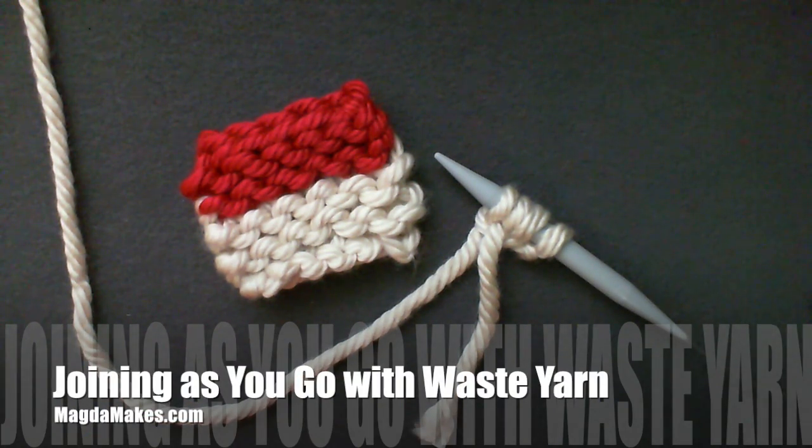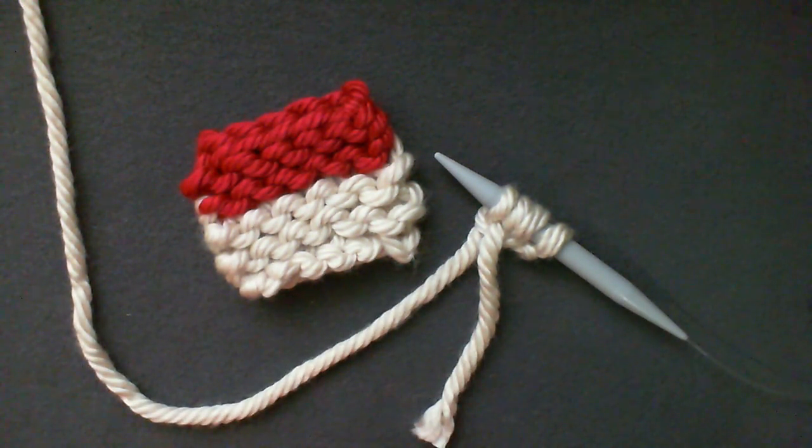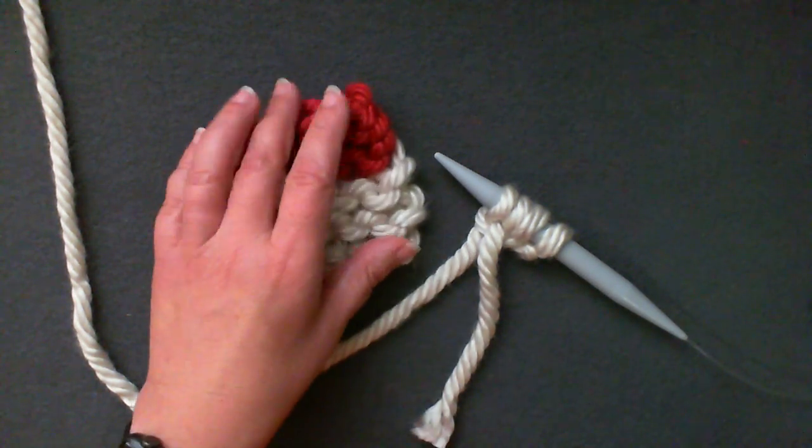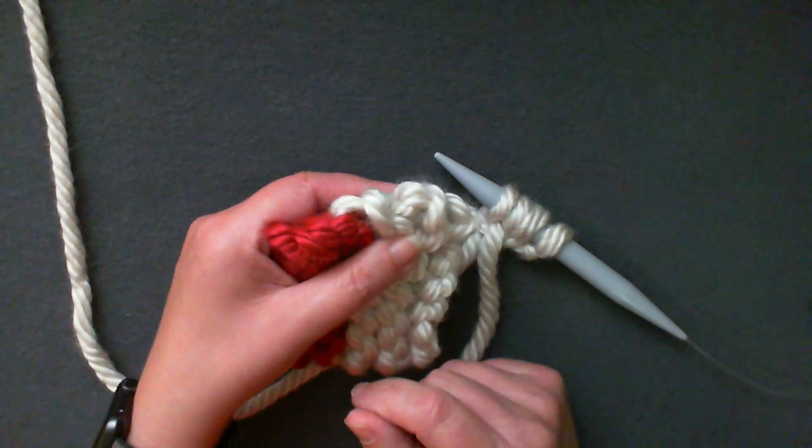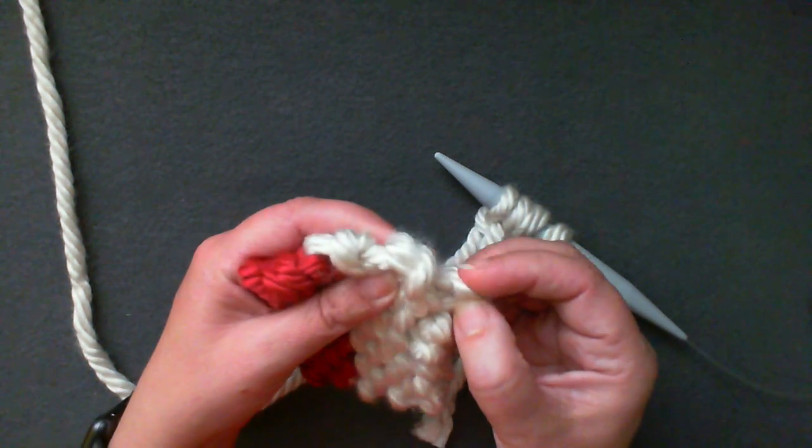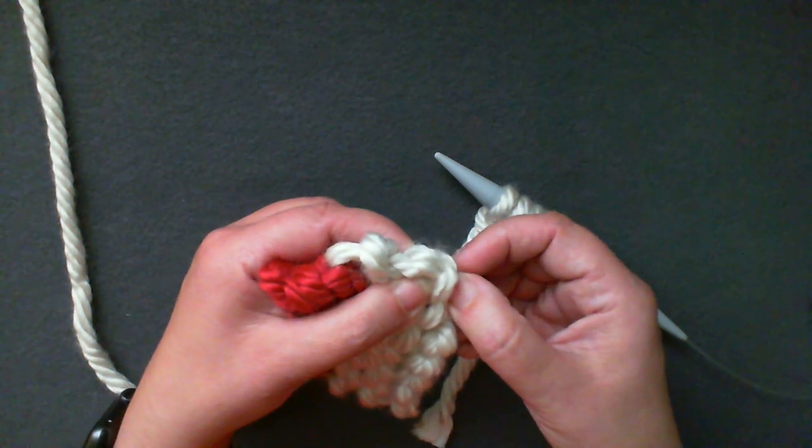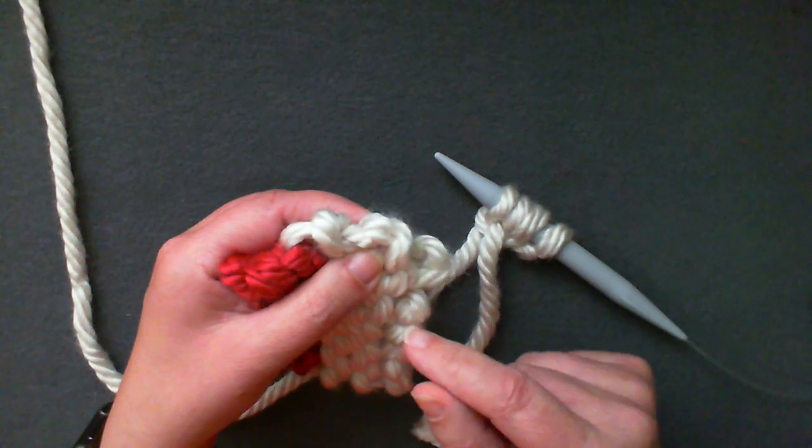When doing join as you go knitting, it is sometimes difficult to know where exactly to enter the stitches on an existing strip of knitting. It doesn't really matter as long as you enter into the same stitch consistently on every second row or every join.